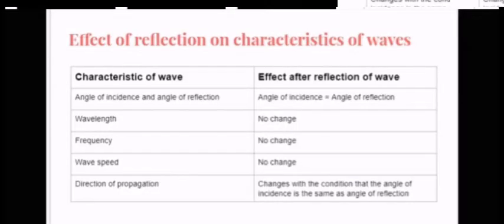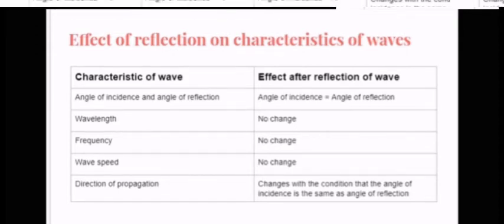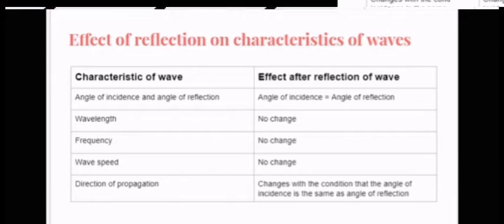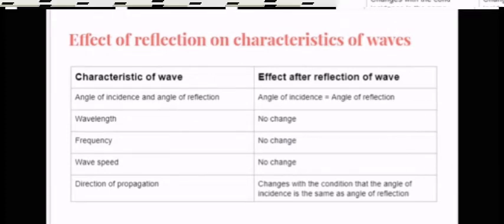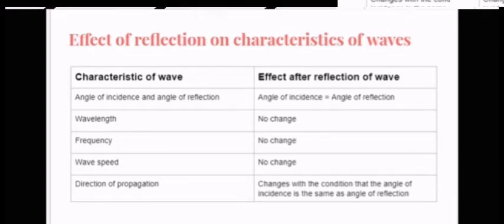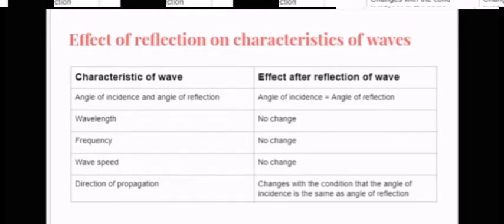Effect of reflection on characteristic of wave. Characteristic of wave, effect after reflection of wave. Angle of incidence and angle of reflection: angle of incidence equal to angle of reflection. Wavelength: no change. Frequency: no change. Wave speed: no change. Direction of propagation: change with the condition that the angle of incidence is the same as angle of reflection.